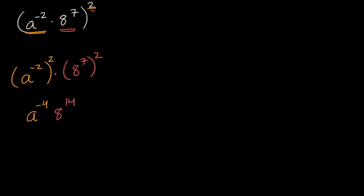In other videos we go into more depth about why this should make intuitive sense. Here you have eight to the seventh times eight to the seventh — you would then add the two exponents and get eight to the fourteenth. However many times you have eight to the seventh, you keep adding the exponents, or multiply by seven that many times. The general idea is that if you raise something to an exponent and then to another exponent, you can multiply those exponents.